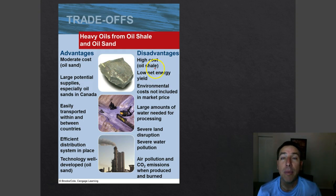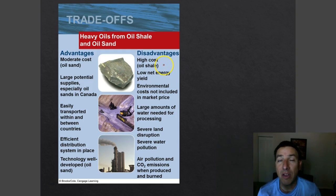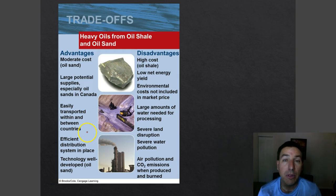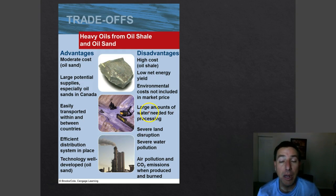What are some advantages and disadvantages of using these? Both tar sands and shale oil have a cost issue — shale oil is much more expensive than tar sands because of the way you access them. Both have very low net energy yields, meaning the energy needed to extract them is very high. On the positive side, there are good deposits in North America, they're easily transported, and we have good technology to get them out and use them.